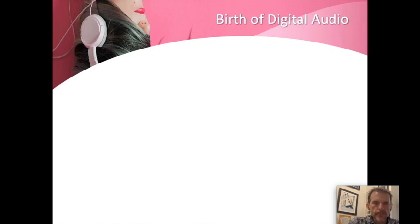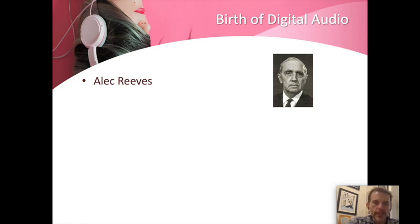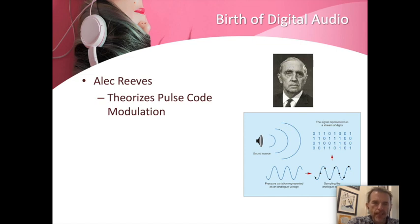Let's talk digital history. Pulse code modulation — everything that's based on digital audio was invented by Alex Reeves when he worked at ITT. He proposed that rather than taking a smooth analog signal and changing it to a smooth electrical signal, if you sample the voltage of that electrical signal at regular intervals and gave it a binary zero or one, those samples could be measured and stored with accuracy and on the other end decoded. This idea of taking a smooth analog signal and sampling it at regular intervals is pulse code modulation, PCM.